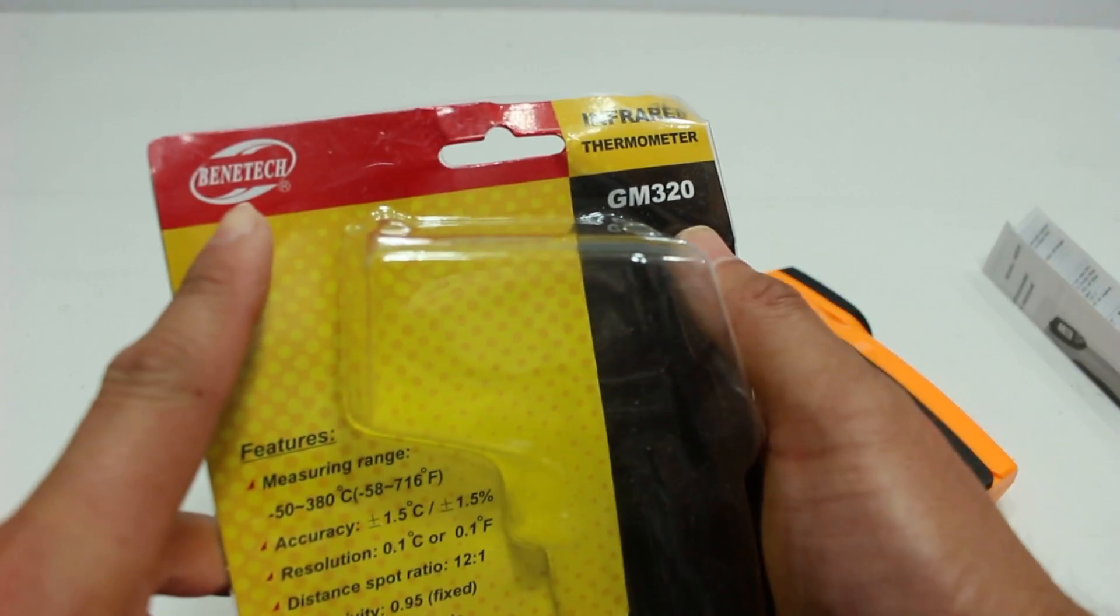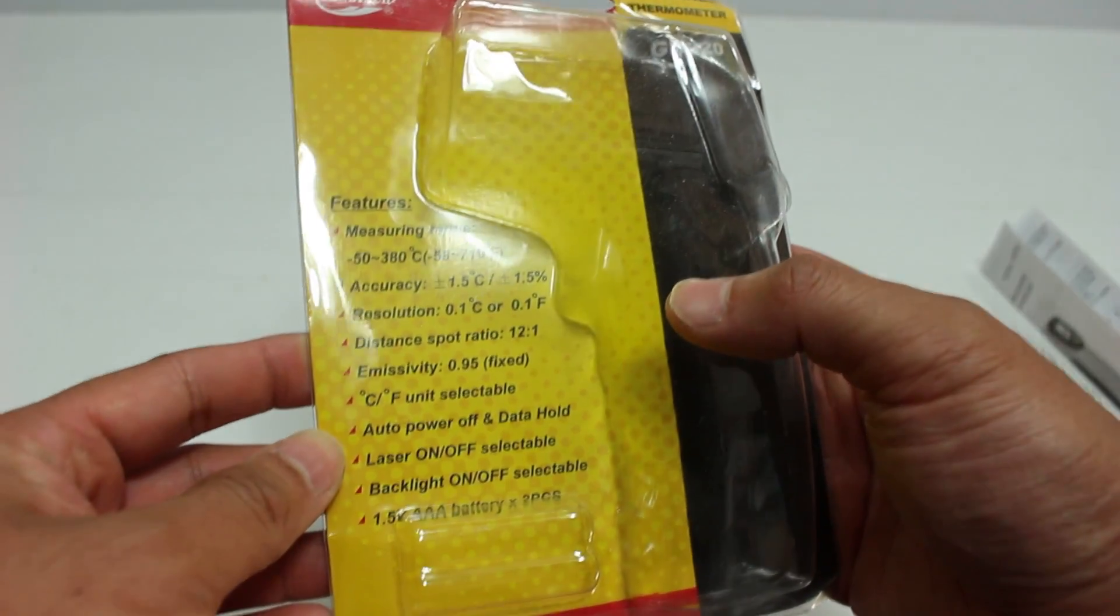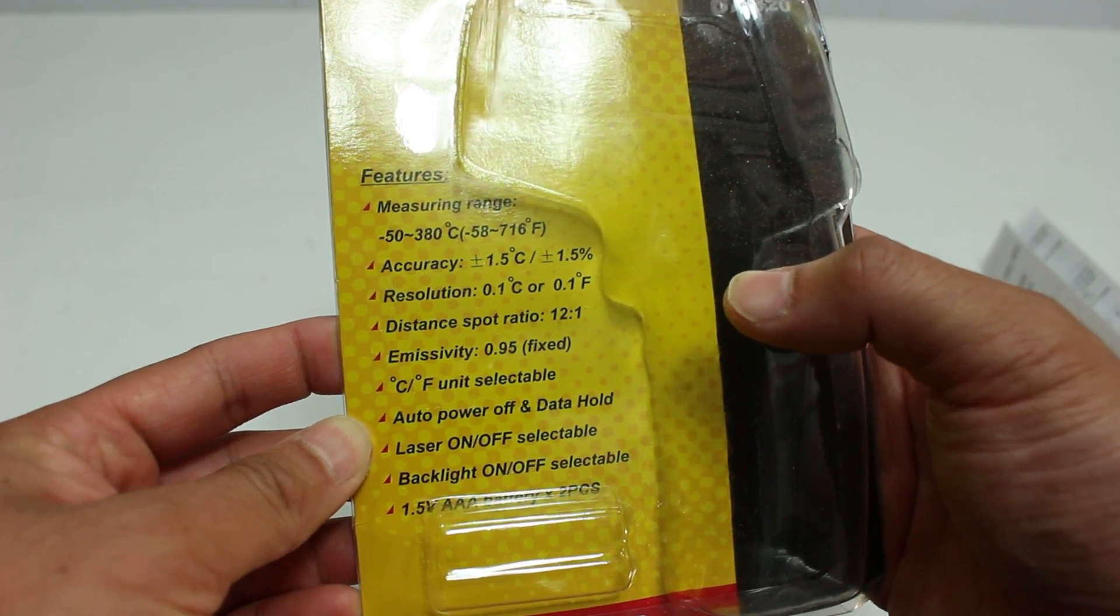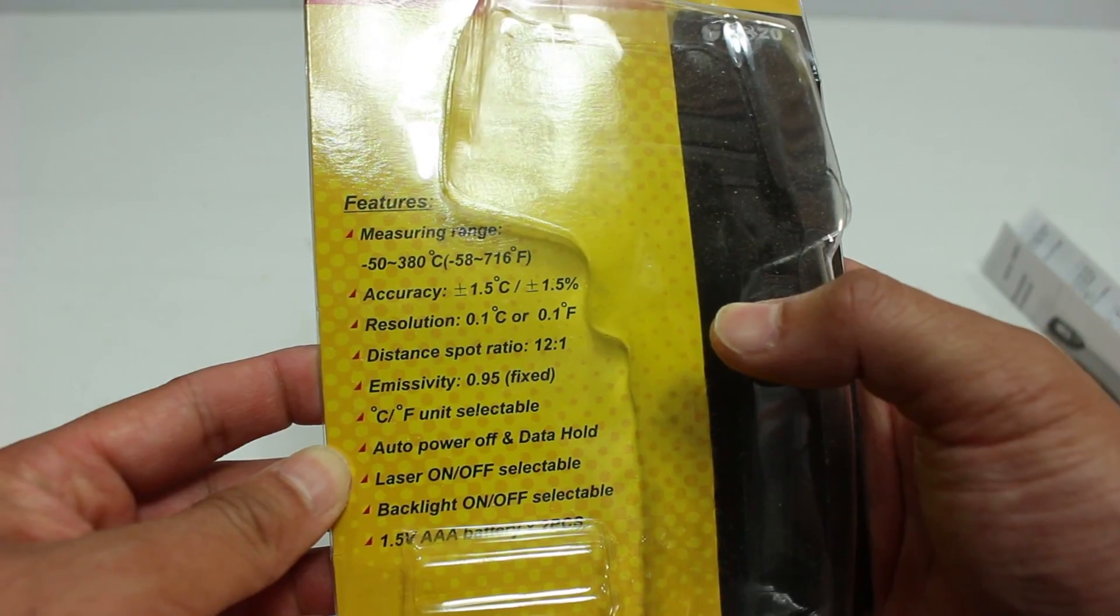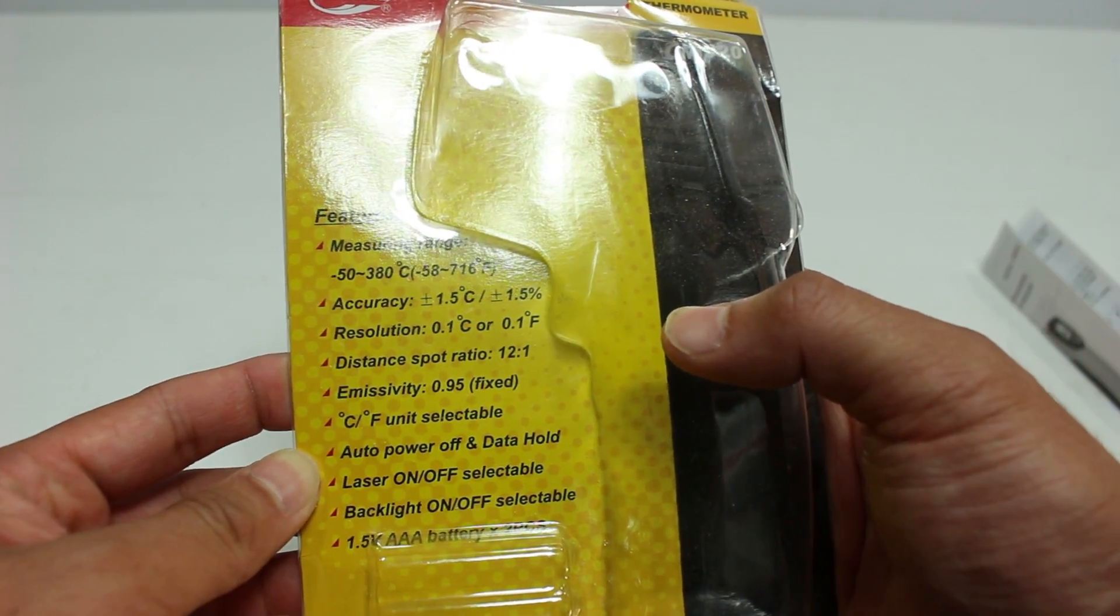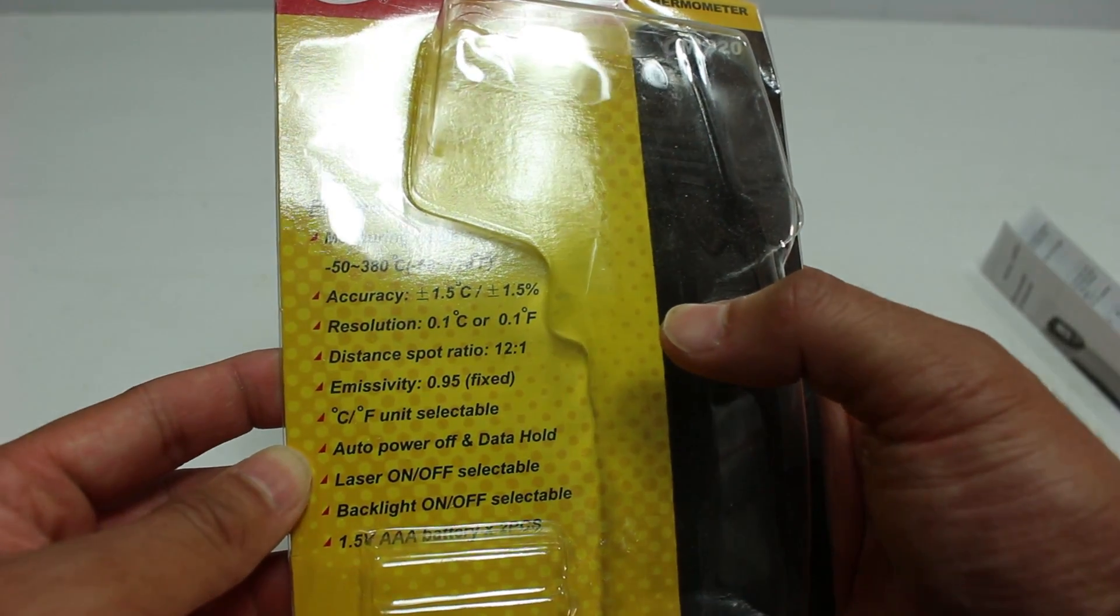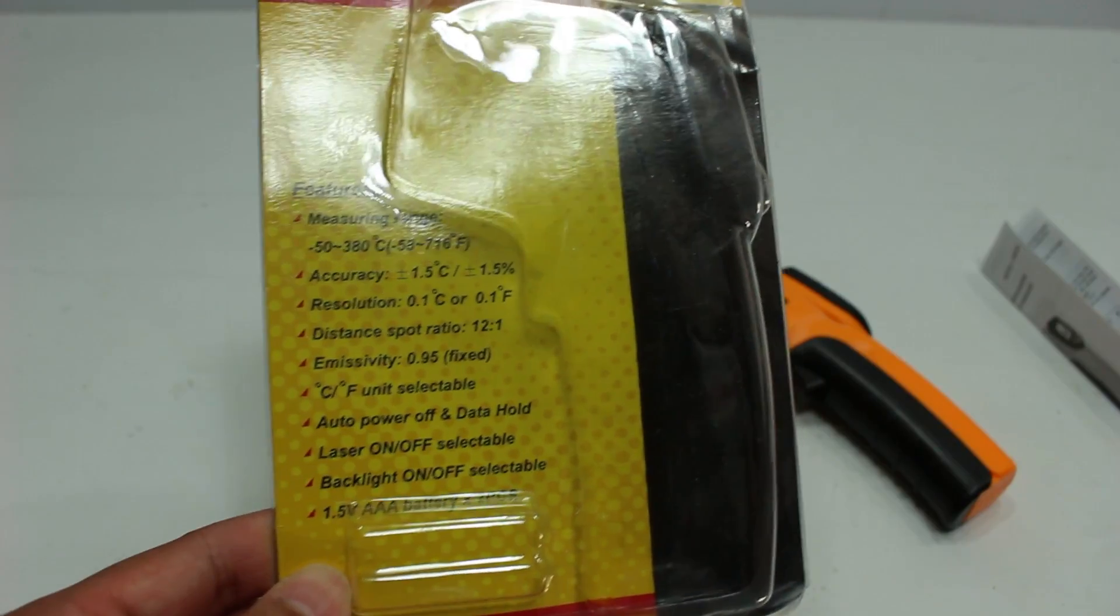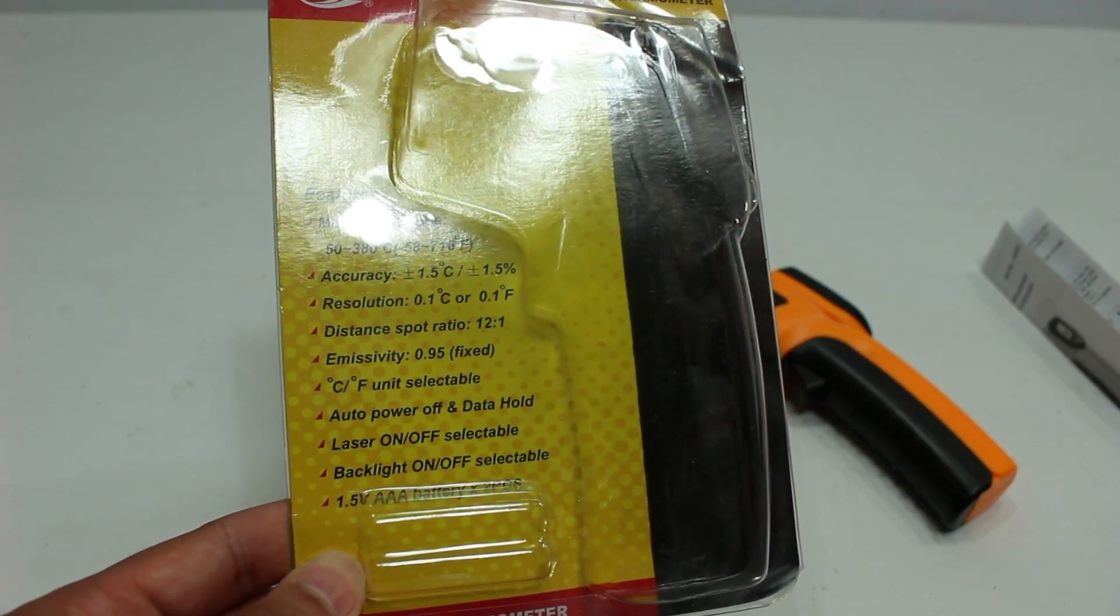It's a Benetek. So what are the features? It's good from minus 50 to 380 degrees Celsius, or minus 58 to 716 Fahrenheit. The accuracy is plus or minus 1.5 degrees Celsius or 1.5 percent, a resolution of 0.1, a distance spot ratio of 12 to 1, and an emissivity of 0.95 fixed.